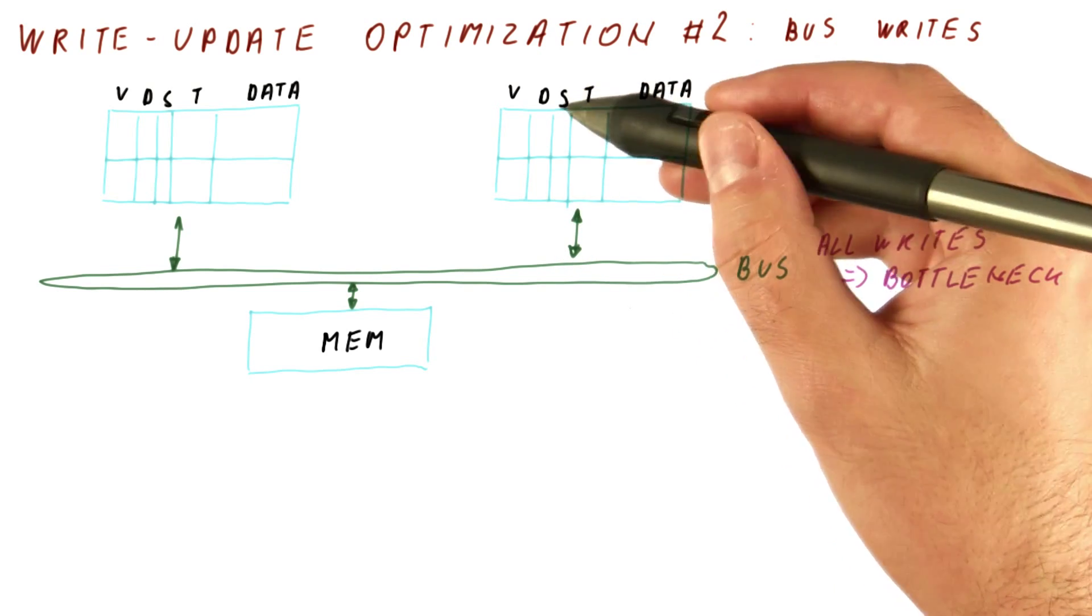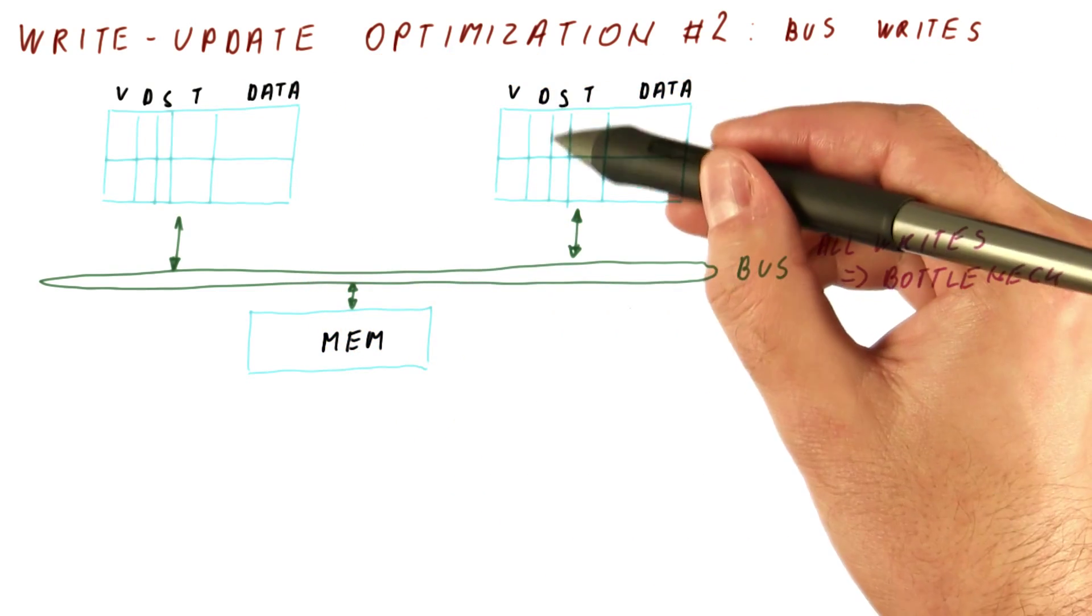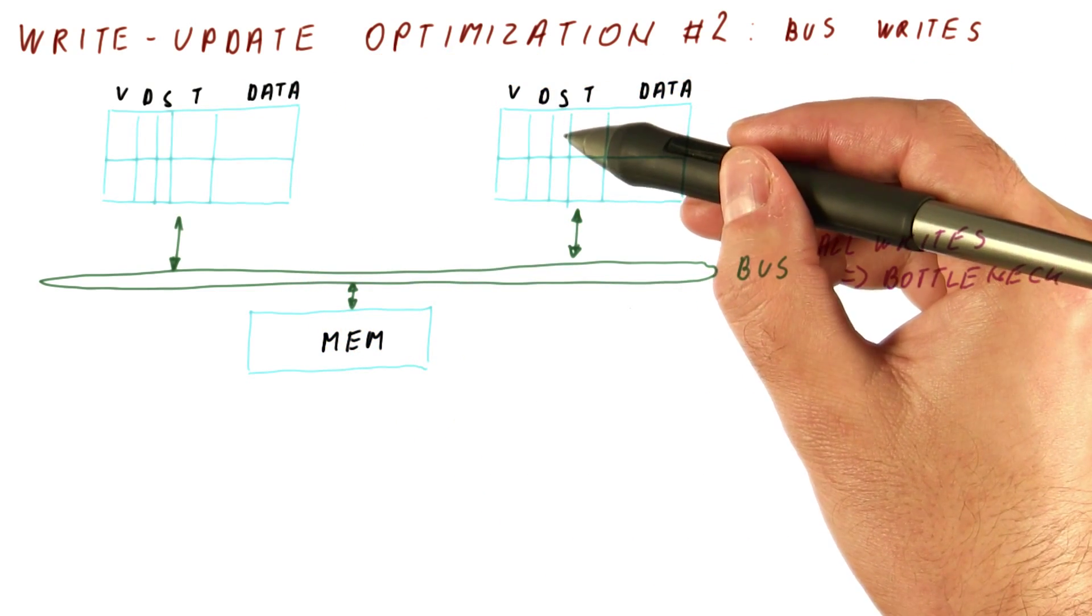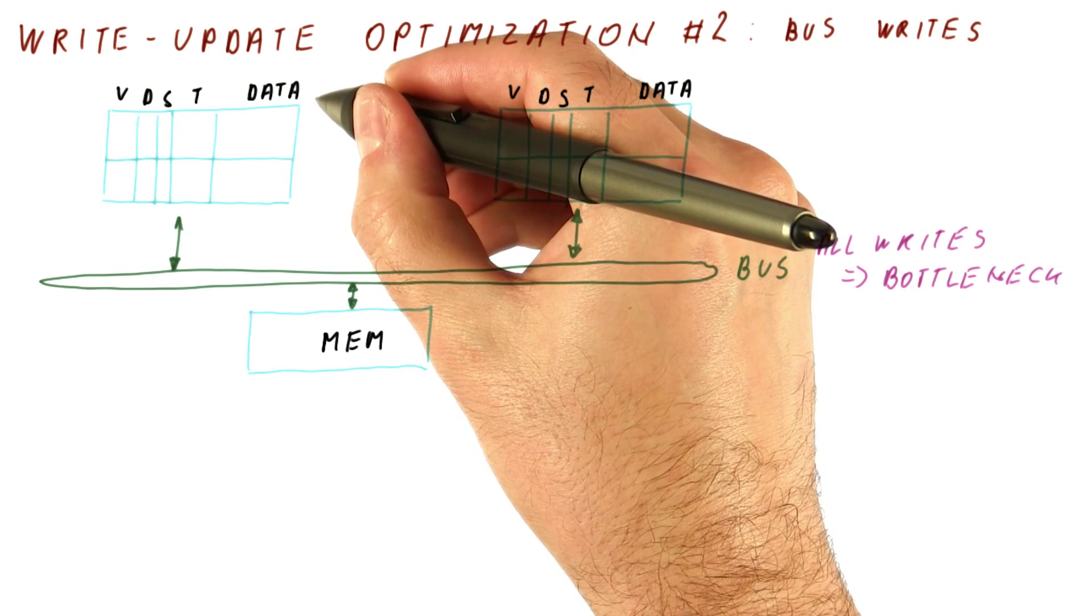So we will add another bit called the shared bit to each block in each cache. And that bit will tell us whether the block is shared with others or not. Let's see how things would work.